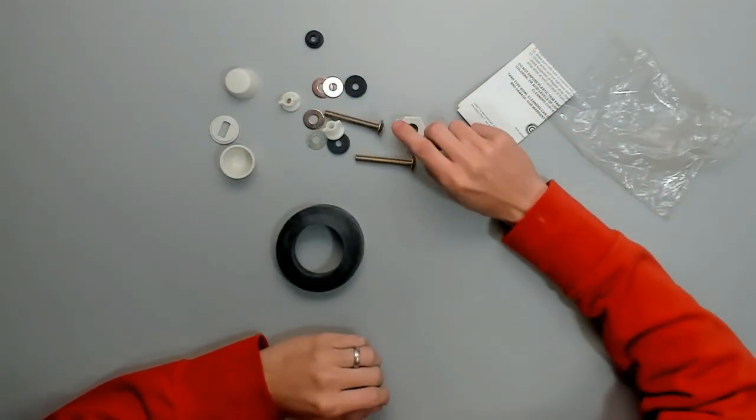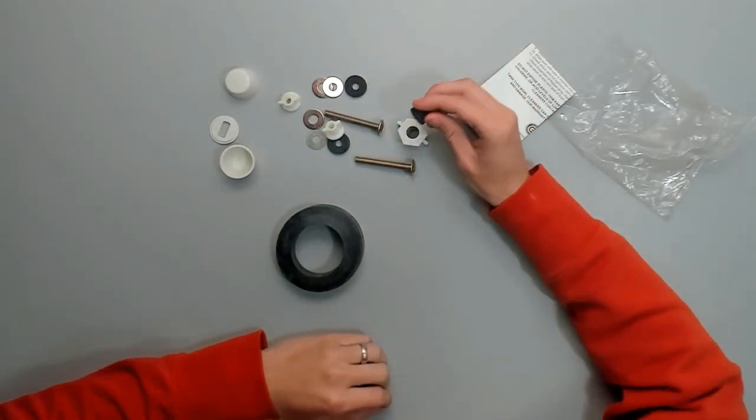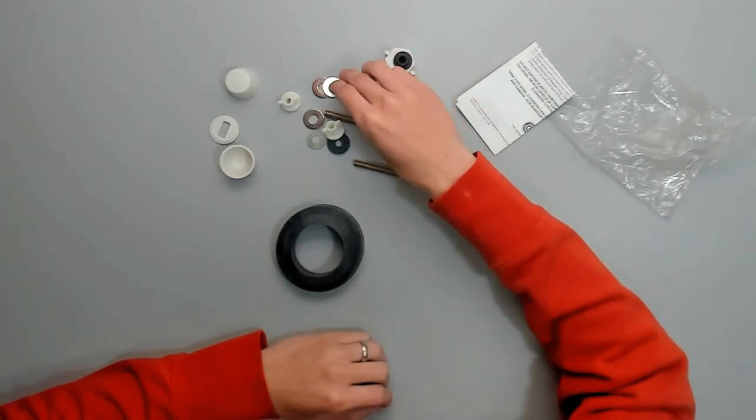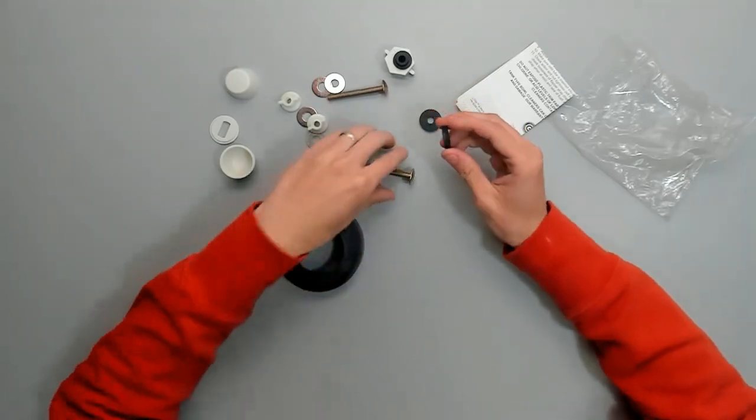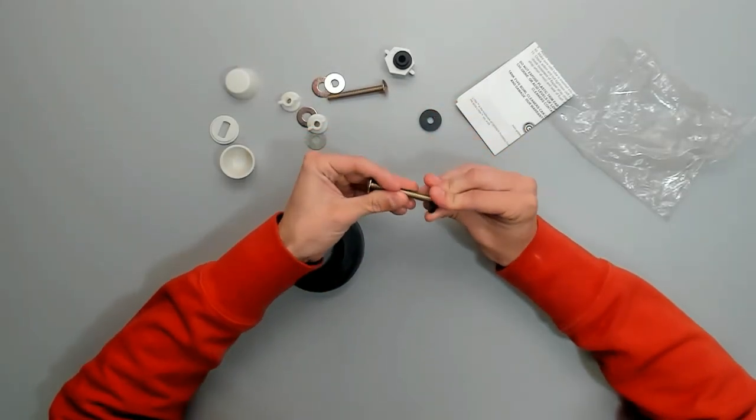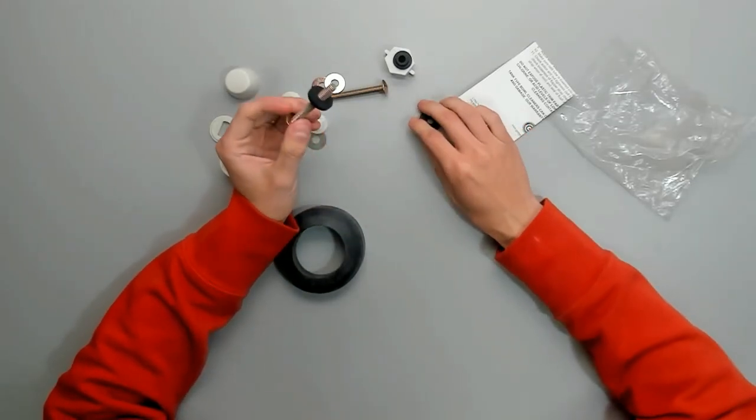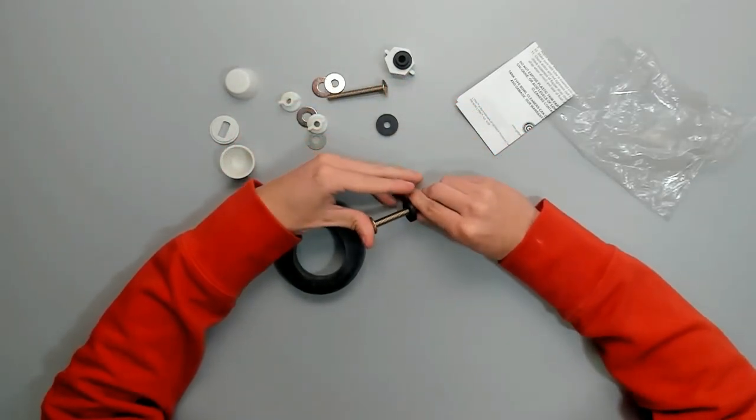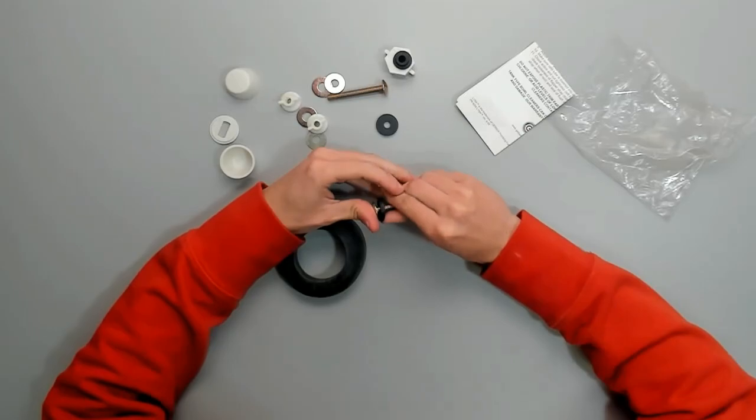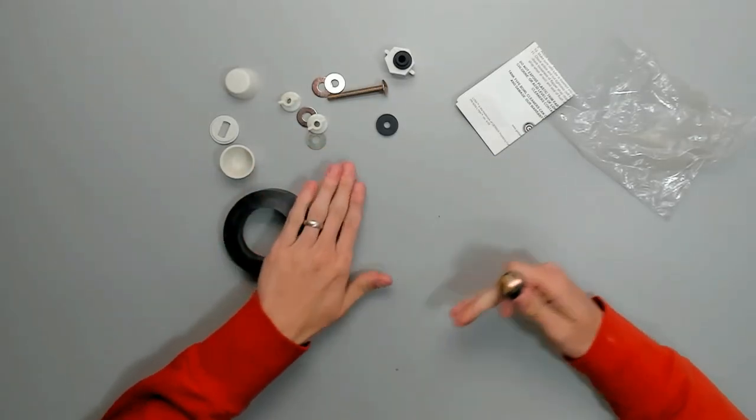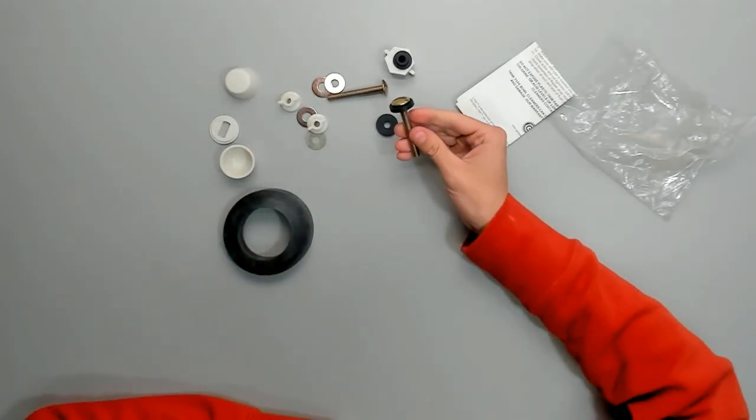So that comes with the supply line nut and washer there. The two washers which go on here. We'll just slide up, set up against each of the bolt heads. Just like that.